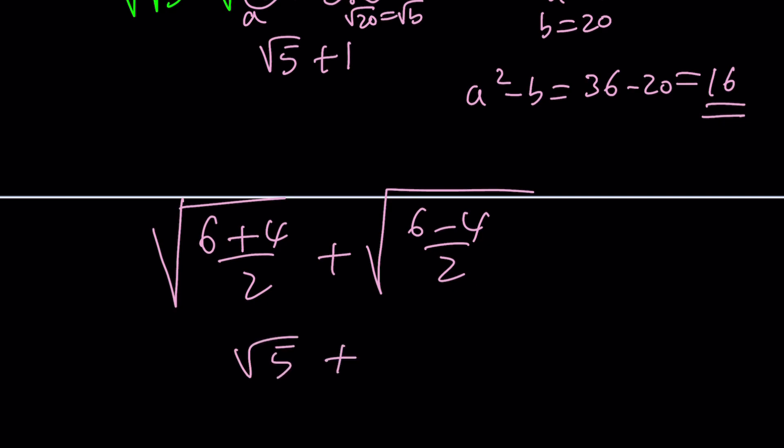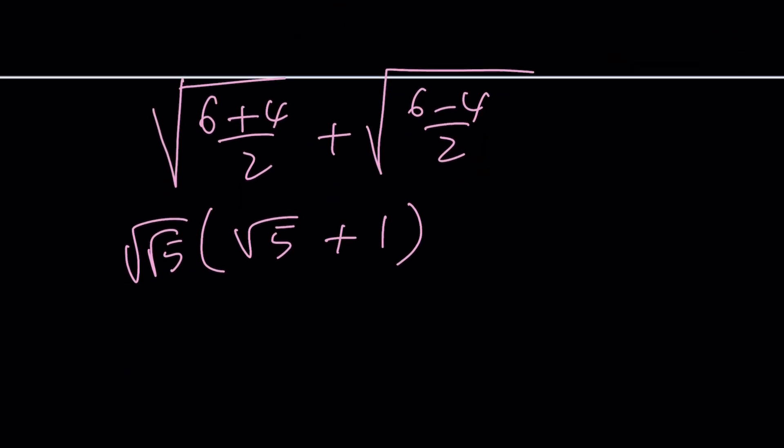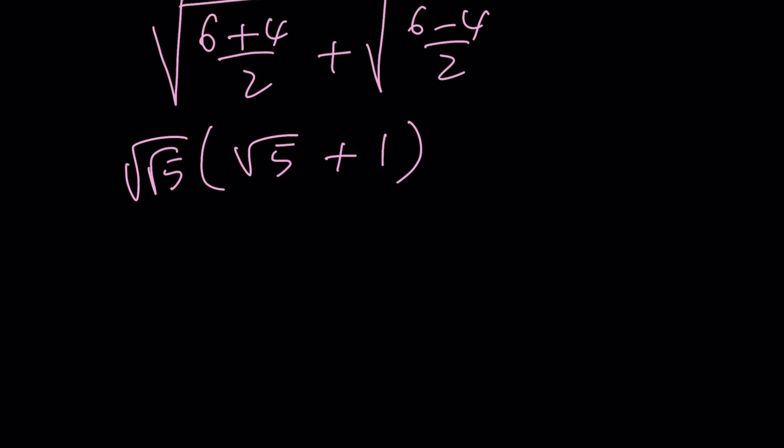And then we have the square root of the square root of 5. So that should be the answer. But what is that equal to? Well, you could probably do the following. Distribute. This is 5 to the power 1 fourth times 5 to the power 1 half plus 5 to the power 1 fourth. So that's the result.